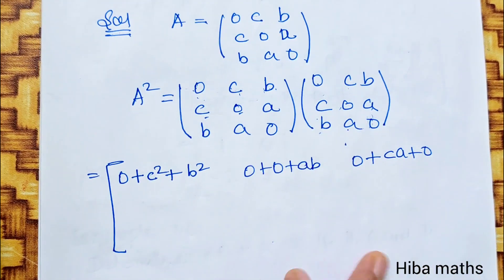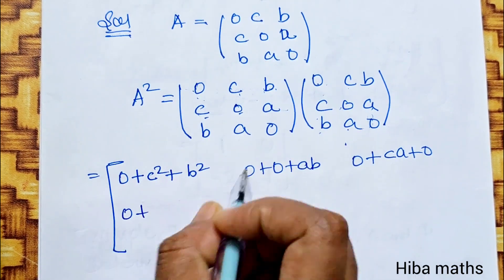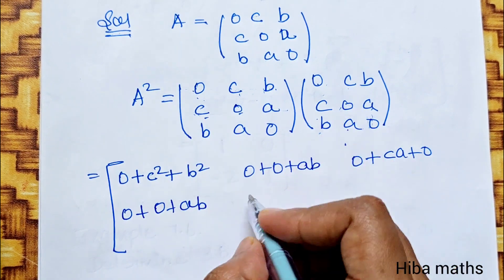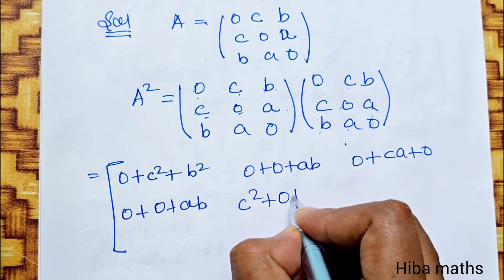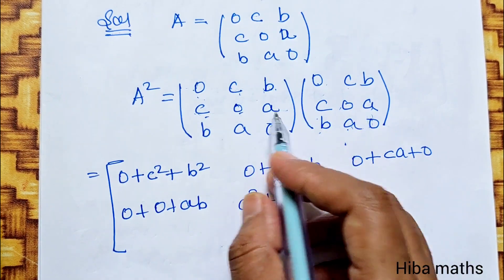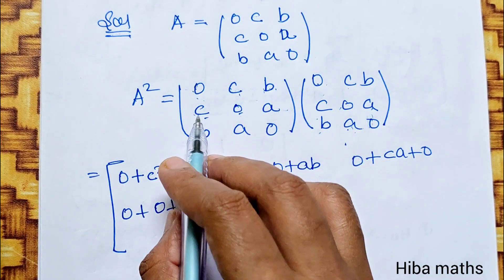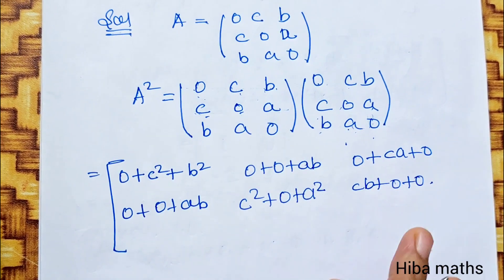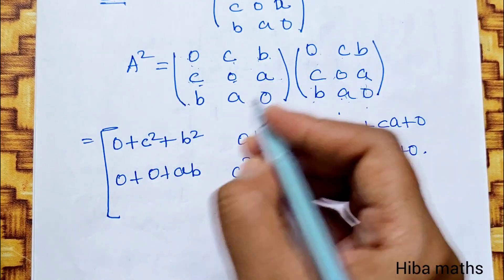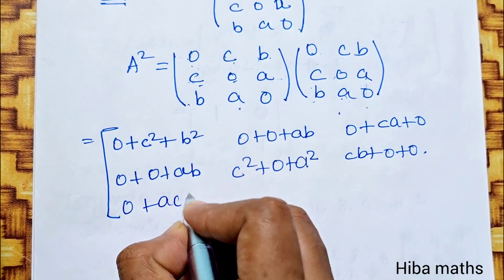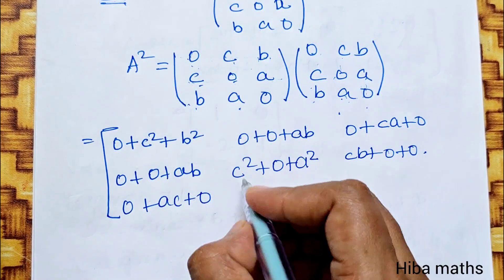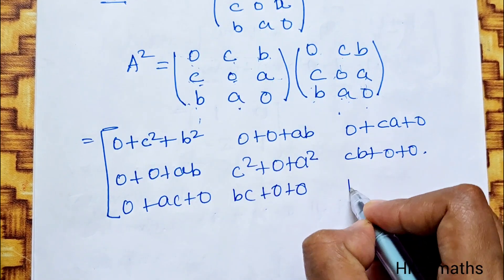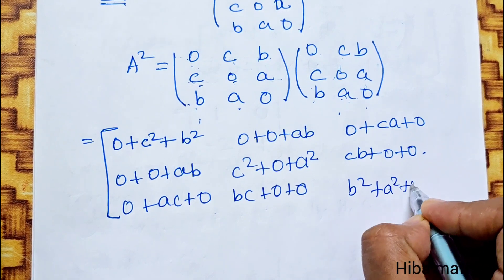1st row continued: C into 0 is 0, 0 into C is 0, A into B is AB. C into C is C squared, 0 into 0 is 0, A into A is A squared. Add: C into B, 0 into A, A into 0. B into 0, A into C, 0 into B. B into C, A into 0, 0 into A. B into B, A into A plus 0.